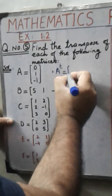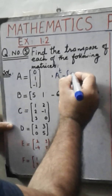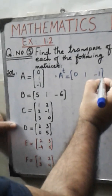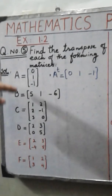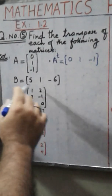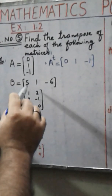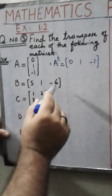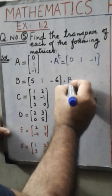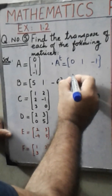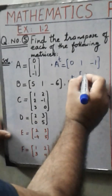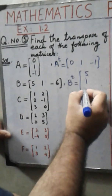Since it's a column matrix, we change the elements of the column into rows, so it becomes 0, 1, minus 1. Now we come to matrix B — it's a row matrix with elements 1, 5, 1, minus 6. We change the row into a column to find the transpose of B: 5, 1, minus 6.